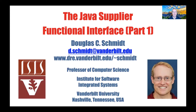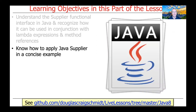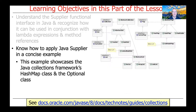Welcome to part one of our discussion of the Java Supplier Functional Interface. In this part of the lesson, we'll take a look at the structure and functionality of Supplier and show how it can be used in conjunction with Java Lambda expressions and method references. We'll take a look at a concise example from my GitHub repository, which will showcase the use of the Java Collection Framework's HashMap class, as well as the Java Optional class.